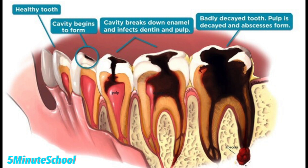Decay in the mouth initially starts with a process called demineralization — the outer enamel layer starts to lose its minerals. Enamel is the hardest material in the human body, but it can start to weaken if you have a high sugar diet and poor oral hygiene. The bacteria in the mouth, mainly Streptococcus mutans, break down the sugar you eat and release acid as a byproduct. This acid causes the enamel to lose its minerals — that's the process of demineralization and it is the first stage of tooth decay.